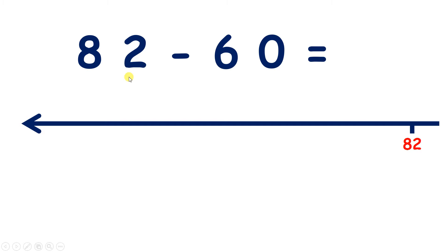Now we have 82 minus 60 on a number line. So what are we going to do? Well, we're subtracting 60, which is 6 tens.